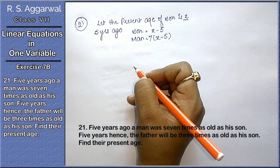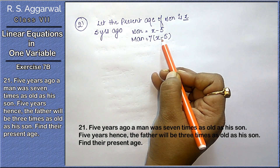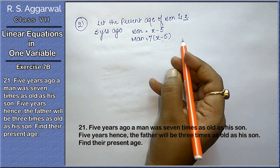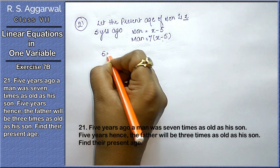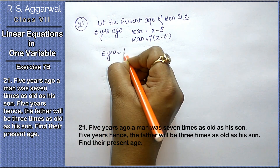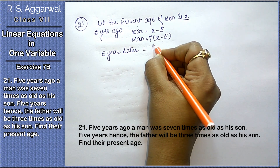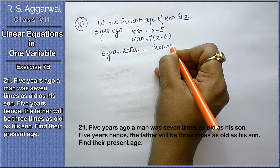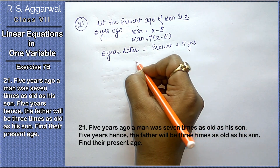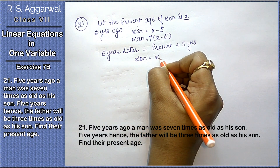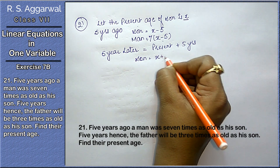5 years ago a man was 7 times as old as his son. Now, 5 years hence means present age plus 5 more years. So the son's present age is x, and 5 years later, the son's age will be x plus 5.